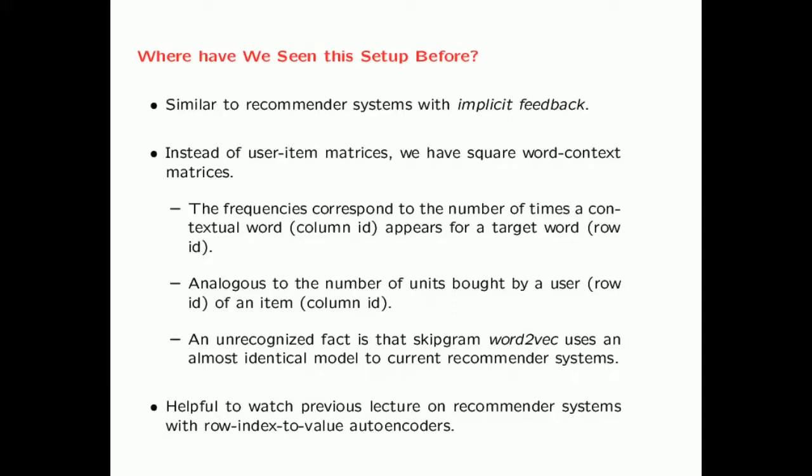Where have we seen this setup before elsewhere in machine learning? It turns out that this setup is very similar to recommender systems with implicit feedback. In recommender systems you have user-item matrices. Here you have square word-context matrices. But the shape of the matrix doesn't really matter. The nature of the matrix is quite similar. In our text application, the frequencies correspond to the number of times a contextual word (a column ID) appears in a target window (a row ID). This is analogous to the number of units bought by a user (row ID) of an item (column ID).